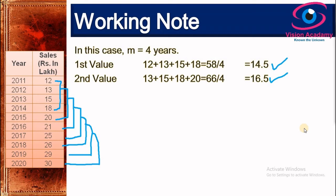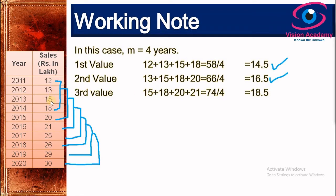The calculation procedure is repeated until all values are exhausted. For the third value, I discard the first two original values and consider 15, 18, 20, and 21, which accounts for 74 divided by 4, giving a third value of 18.5.